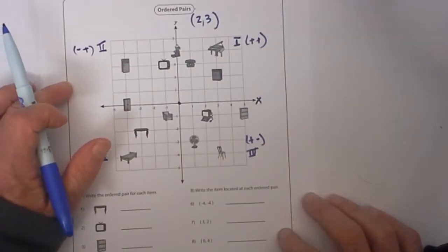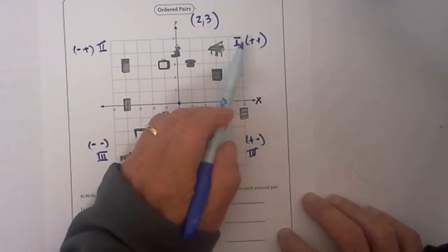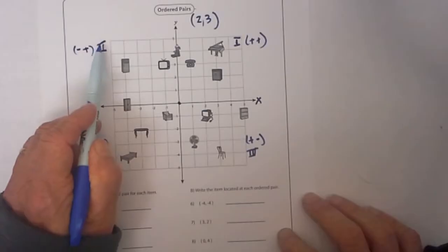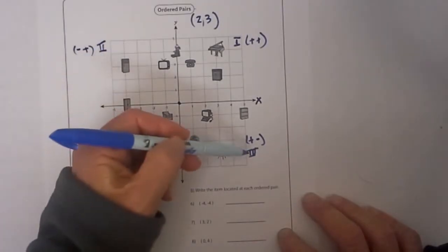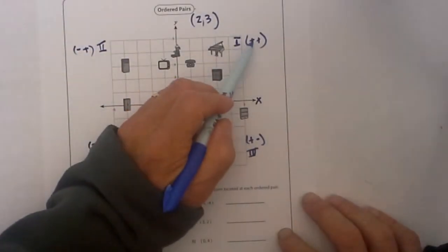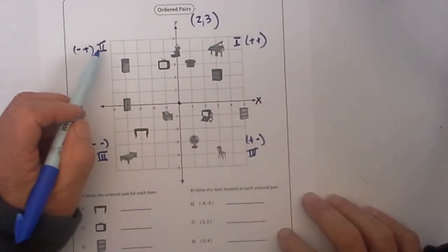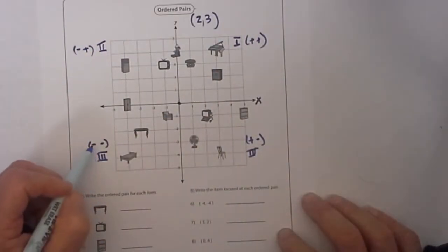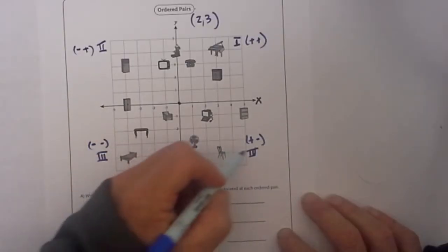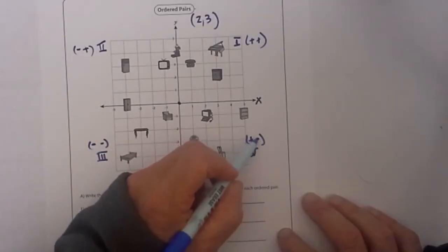Coordinate plane is also divided into four quadrants. I have them labeled here. We have 1, 2, 3, and 4. In quadrant 1 you are positive, positive. Quadrant 2 you are negative, positive. Quadrant 3 you are negative, negative. In quadrant 4 you are positive, negative.